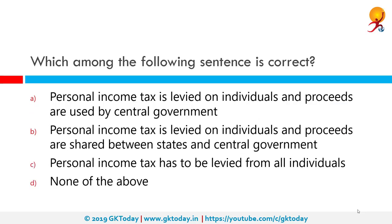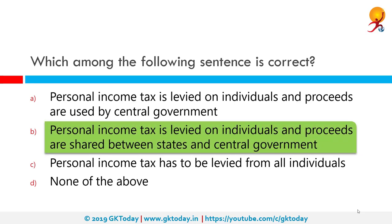Which among the following sentences is correct? Option B, which states that personal income tax is levied on individuals and proceeds are shared between states and central government, is correct. If you are less than 60 years of age and your total annual gross income exceeds rupees 2.5 lakhs, or if you are a senior citizen above 60 and below 80 years of age and your total annual gross income exceeds 3 lakhs, you are liable to pay taxes.